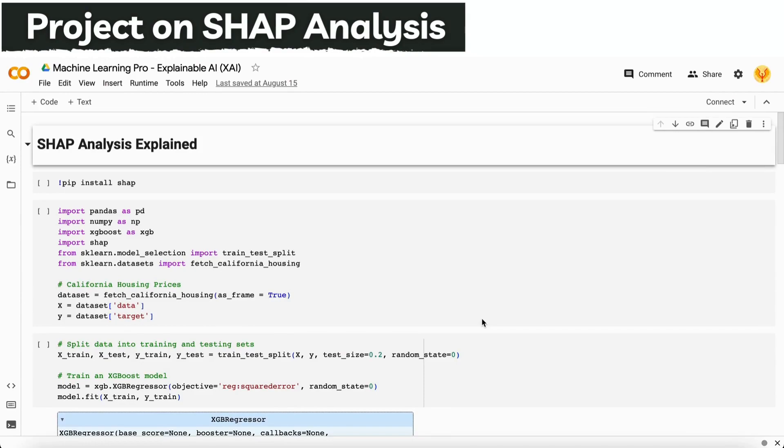Here is the project that I built using SHAP analysis and an XGBoost regression problem statement. In this problem statement we take the dataset of California house pricing and we will use SHAP analysis on our XGBoost model. The first thing I do is import all the necessary libraries and install the SHAP library as well.